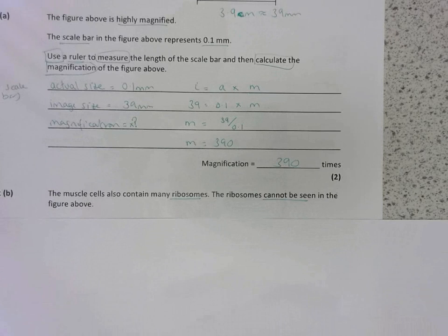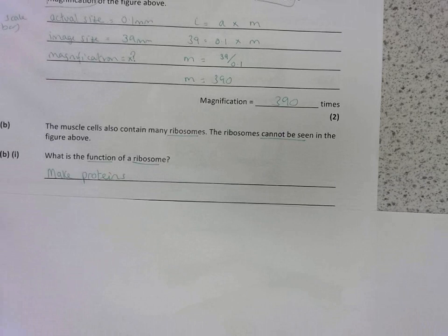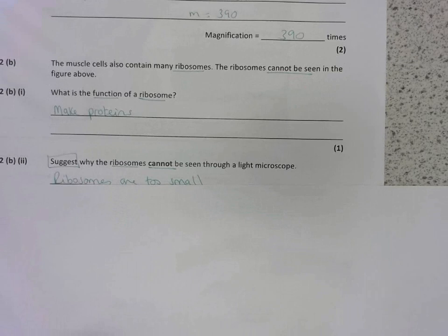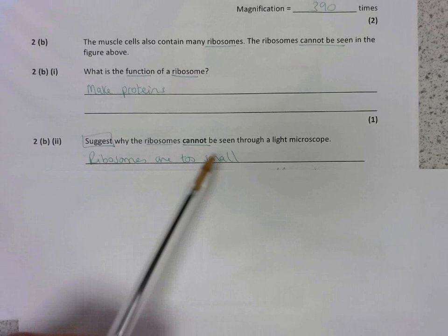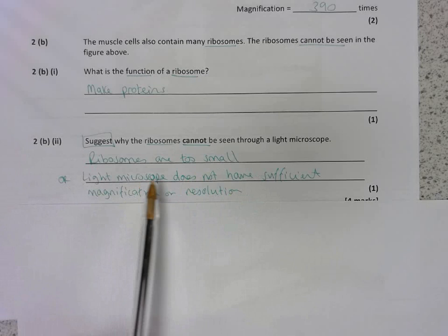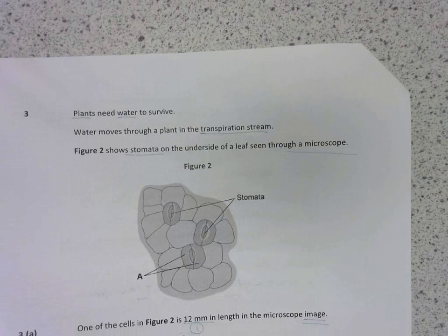Next, the muscle cells contain ribosomes, which cannot be seen in the figure above. What is the function of the ribosomes? It is to synthesize proteins, or to make proteins. That's a fact you need to learn. Why can't they be seen through a light microscope? Well, ribosomes are too small to be seen through a light microscope. Another way of saying that is, light microscopes do not have sufficient magnification, or resolution, or resolving power. So either of those would get you a mark.